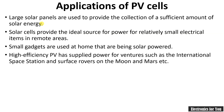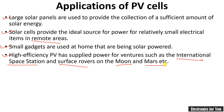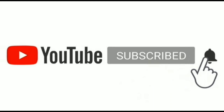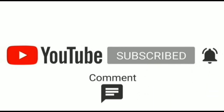The applications of photovoltaic cells include: large solar panels for collecting sufficient solar energy; providing power for small electrical items in remote areas; small devices used at home such as calculators or emergency lamps; and high-efficiency photovoltaic cells that have supplied power to ventures such as the International Space Station and surface rovers on the Moon and Mars. They are generally used in space exploration.